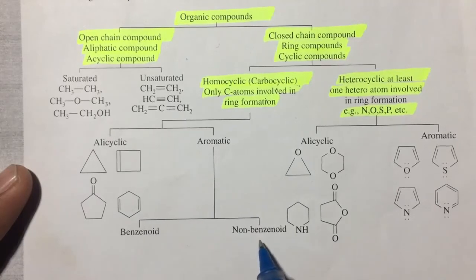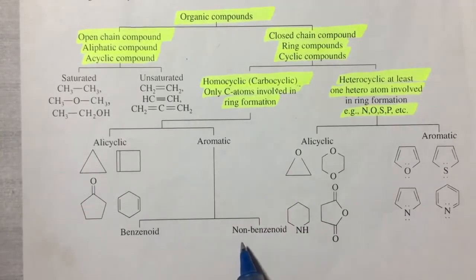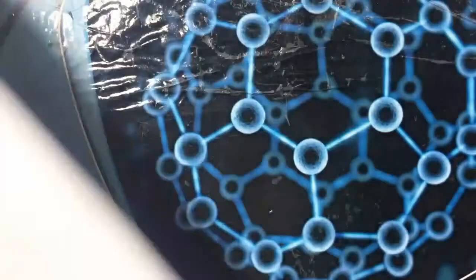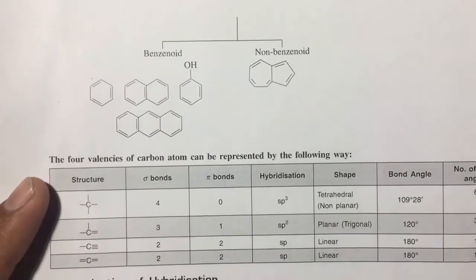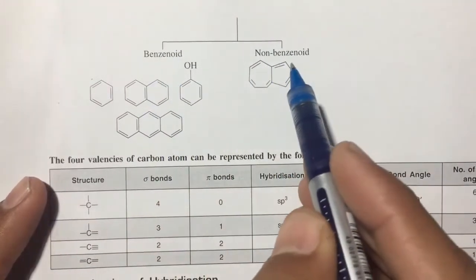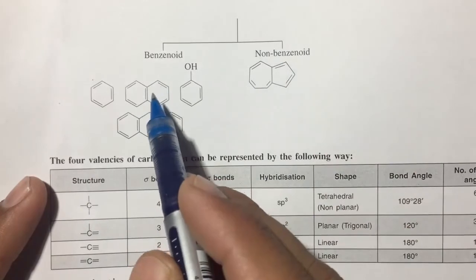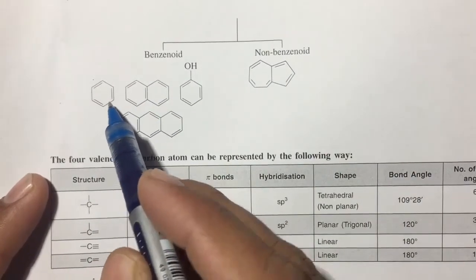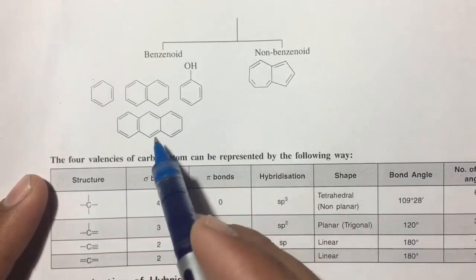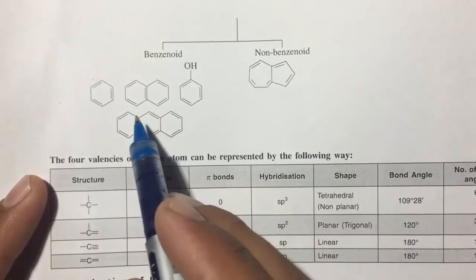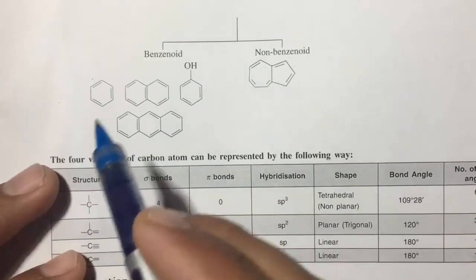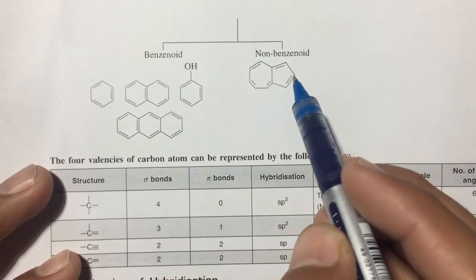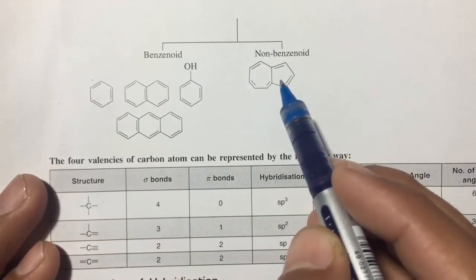Aromatic compounds are of two types: benzenoid and non-benzenoid. Benzenoid compounds contain a benzene ring — examples include benzene, phenol, and anthracene. Non-benzenoid aromatic compounds are also aromatic but do not contain a benzene ring.